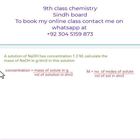A solution of NaOH has a concentration of 1.2 molar. Calculate the mass of NaOH in grams per cubic decimeter in this solution.